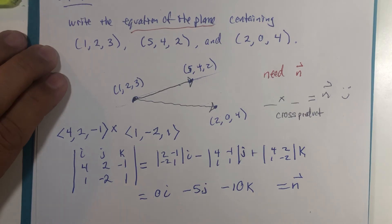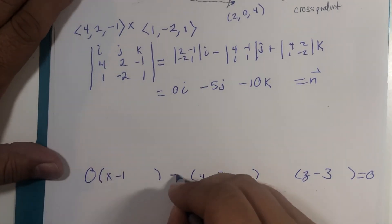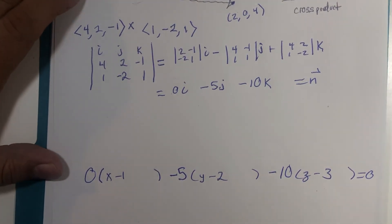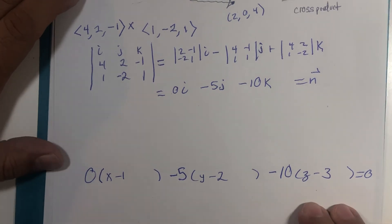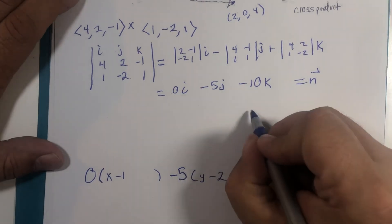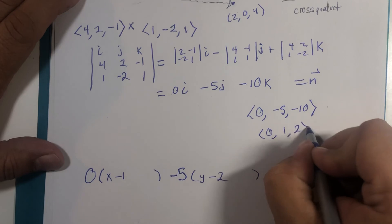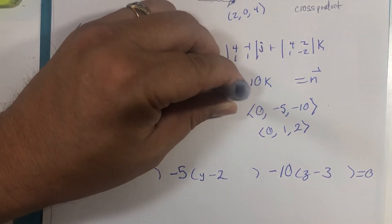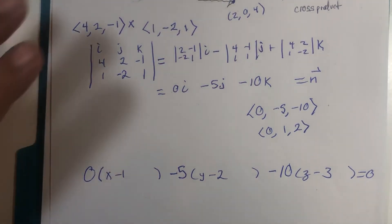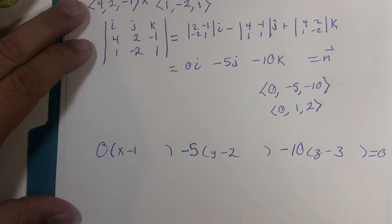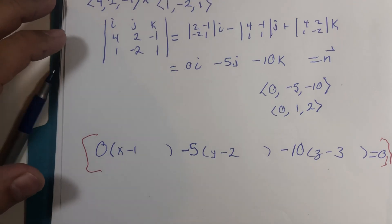There it is — the normal vector with components 0, -5, and -10. Plugging these into the equation gives us our plane. Note that vectors have both direction and magnitude, so if you divide by -5 you get a shorter vector pointing the opposite direction that is also normal to the plane. You could divide both sides of the equation by -5 to simplify — leave it as is or simplify as you prefer. All right, until next time.